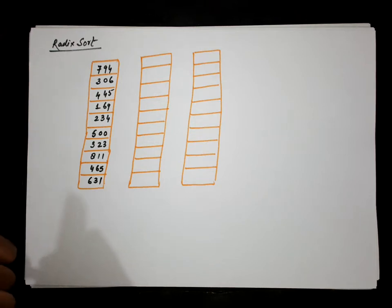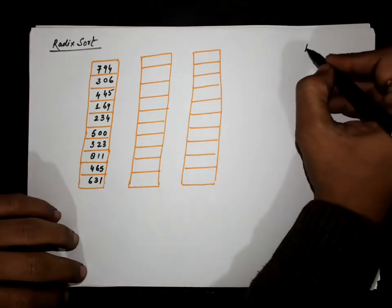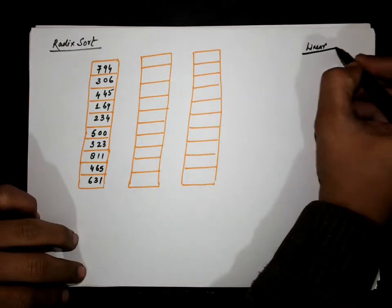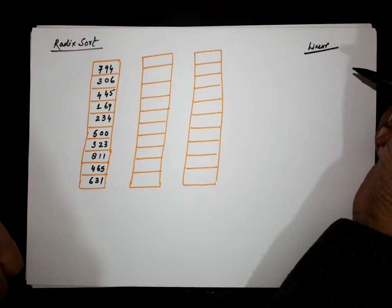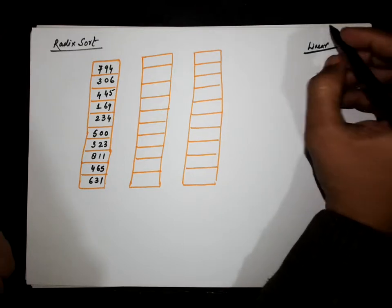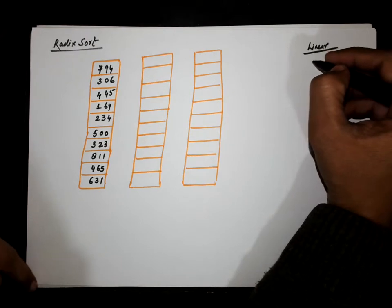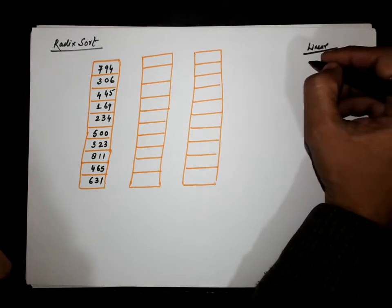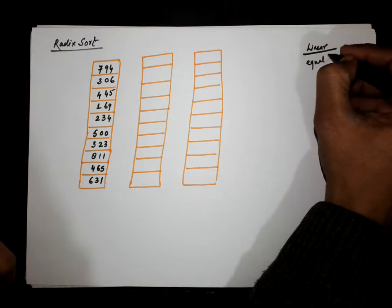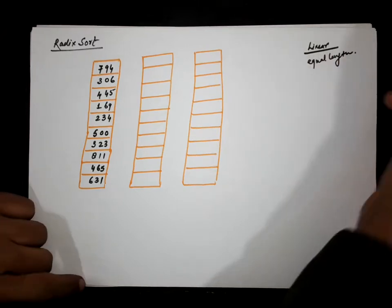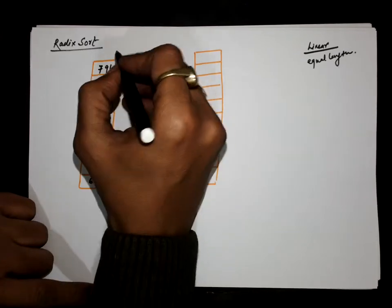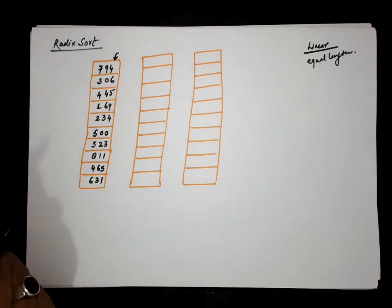Let us discuss Radix Sort, which is also a linear sorting technique in which we can sort elements in linear time. Suppose these are the elements given to us. You can see that the length of the numbers are the same — all numbers are of three digits. This is actually the limitation of Radix Sort: we can only apply it to a set of elements which are of equal length.